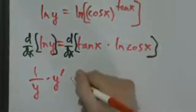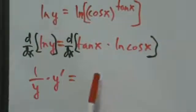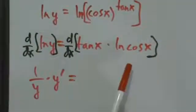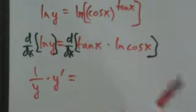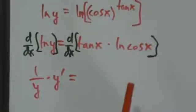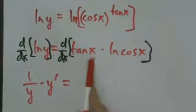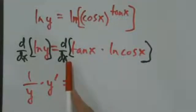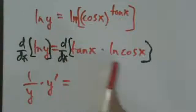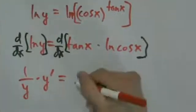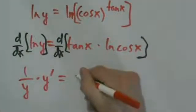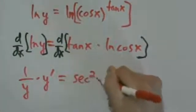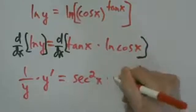So that's the left side. On the right side, we just have a normal product rule with some complex functions. Tangent of x is our first function, and natural log of cosine of x is the second. The product rule says the derivative of that product is going to be derivative of the first times the second.